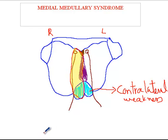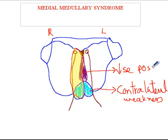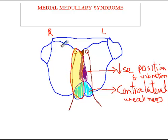Number two, if you have the medial lemniscus involved, this will cause contralateral decrease in position and vibration sense. As you would recall, the medial lemniscus is a continuation of the dorsal columns. So if it is the right medial lemniscus involved, it will cause left-sided decrease in position and vibration.